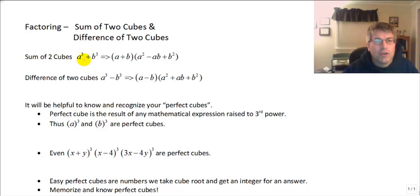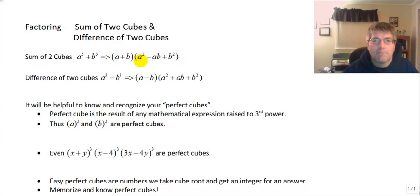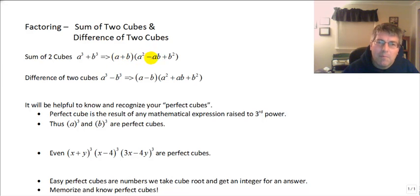We're going to have to take the cube root of a number — that goes in the first term of the binomial. So for a cubed plus b cubed, the cube root of a goes in the first position, and the cube root of b goes in the second position. Then we have a trinomial: square a for the beginning, square b for the end, and multiply a times b for the middle. This one has a minus sign right after the a squared.